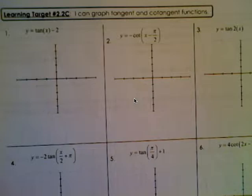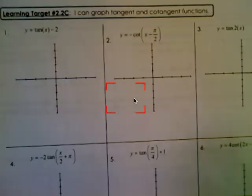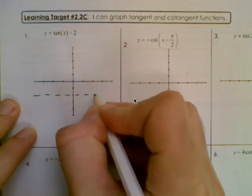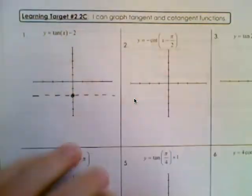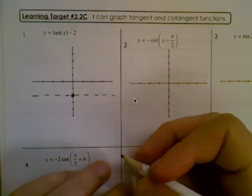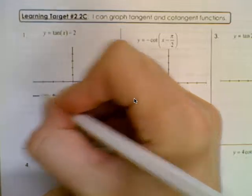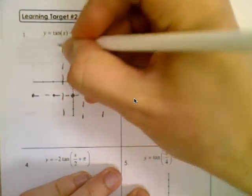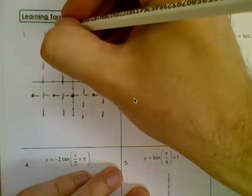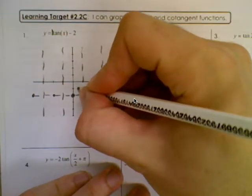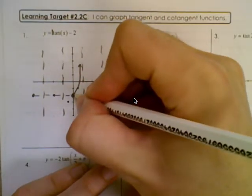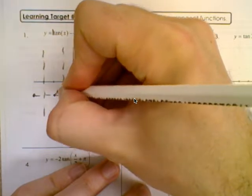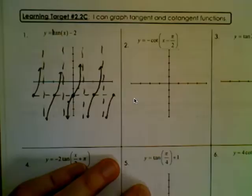Now let's graph y equals tangent of x minus 2. It's important to know we have a vertical shift down 2 and no horizontal shift. Tangent starts on the midline. Because the b value is 1, the period is pi, so every pi away we get more points on the tangent curve. The asymptotes are halfway between those points. Since the a value is 1 and tangent goes upward, we go up 1 halfway to the asymptote, then down 1 halfway to the asymptote to get the S-curve.